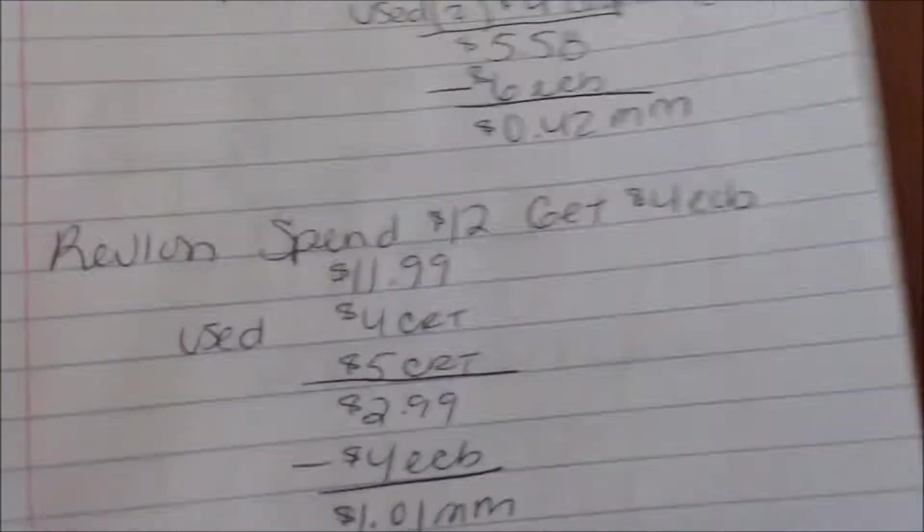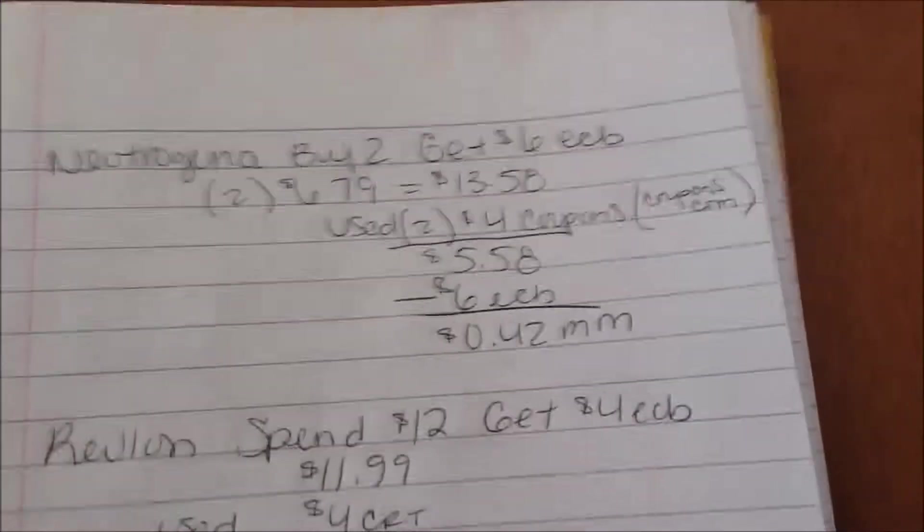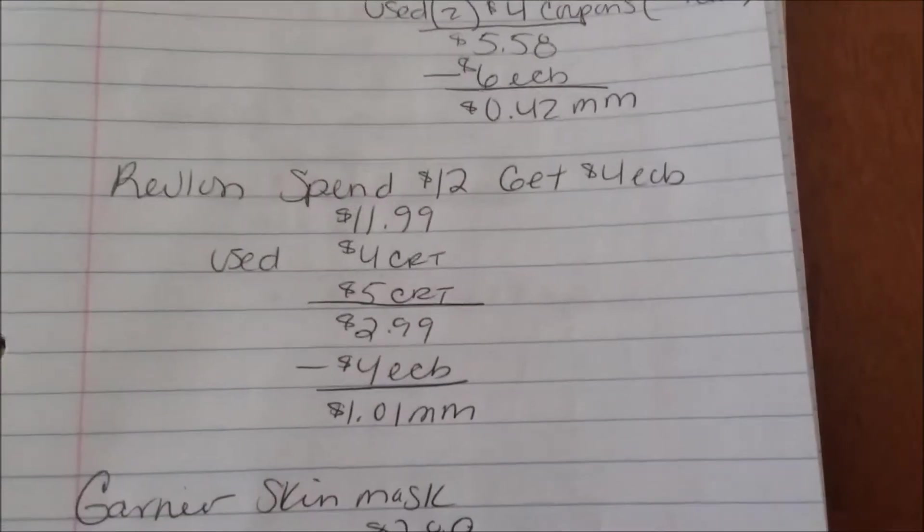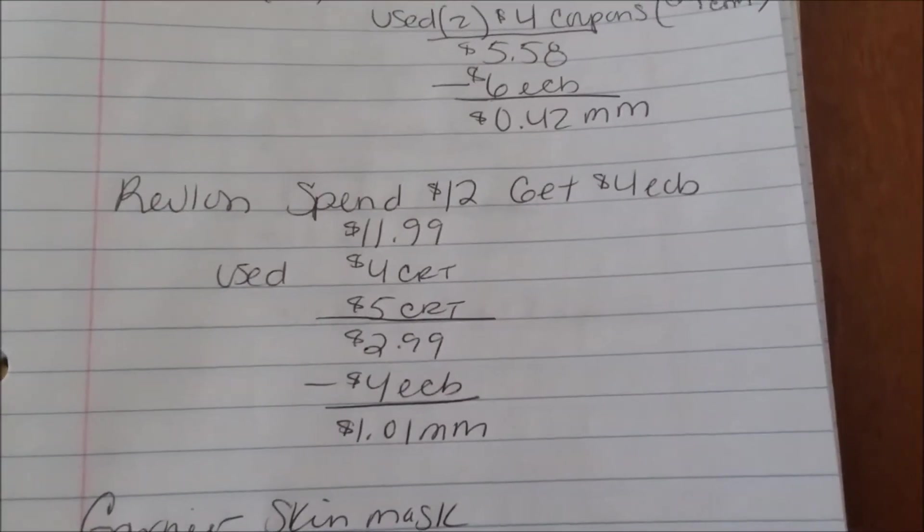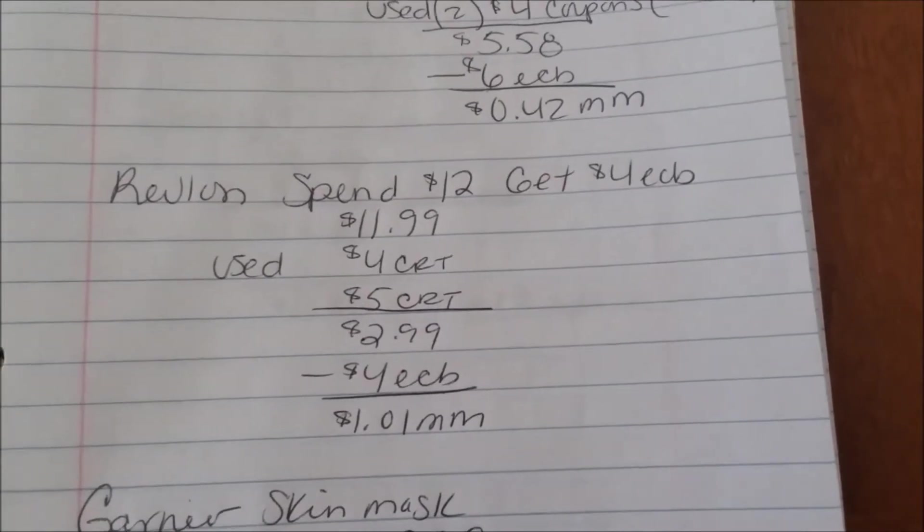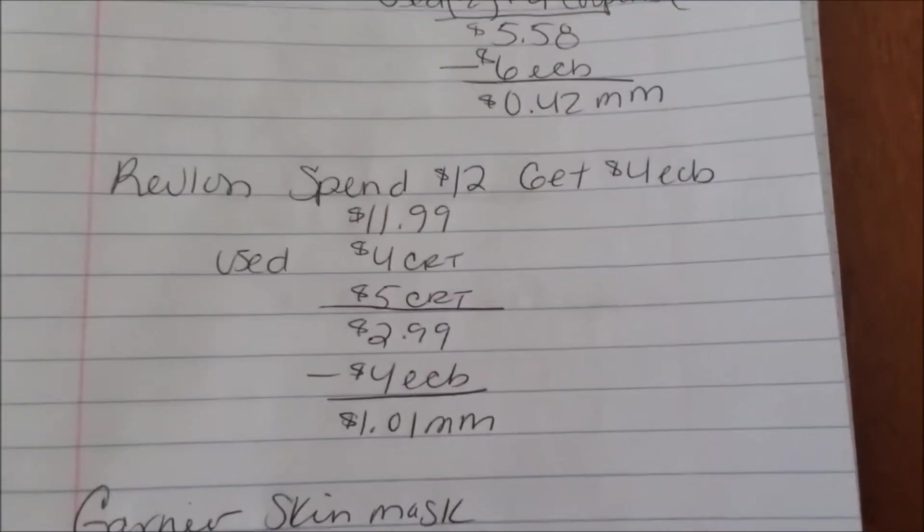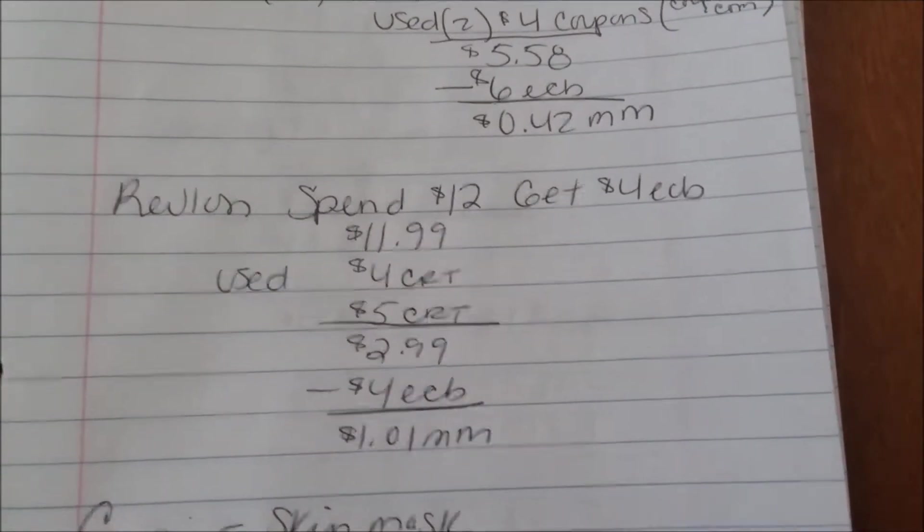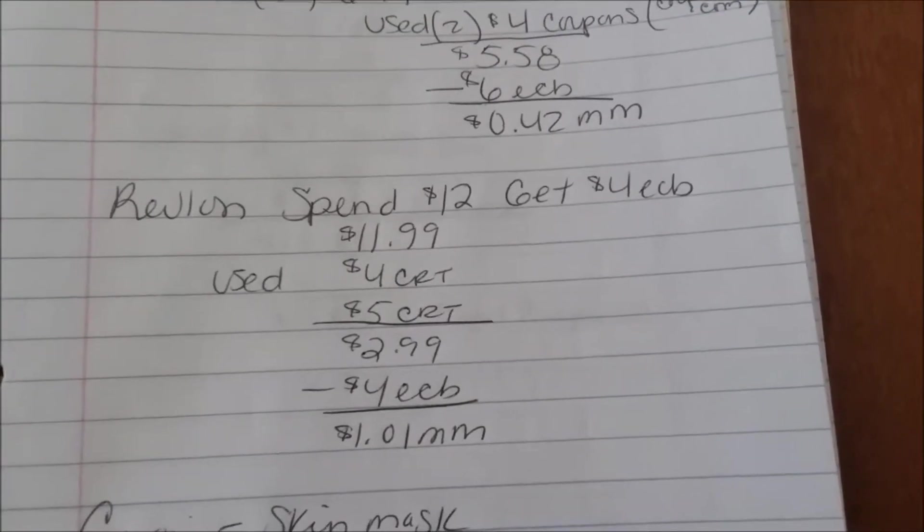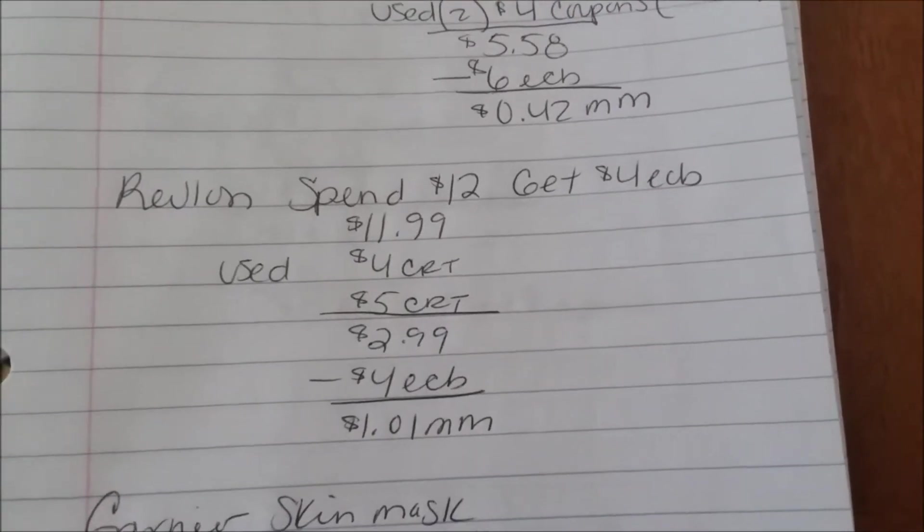Revlon is on a promo for spend 12 get four. I picked up an eyeliner for $11.99. I used a $4 CRT I got from last week and then I used my $5 CRT that everyone should be getting at the Redbox this week, brought it down to $2.99. After getting my $4 ECB back it made it free plus a dollar and one cent money maker for that right there. That's an amazing deal.